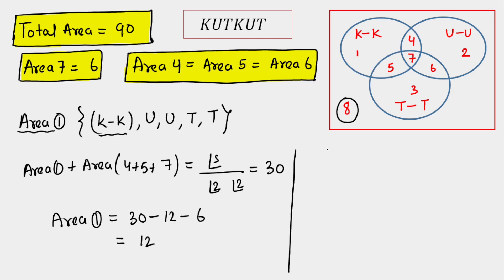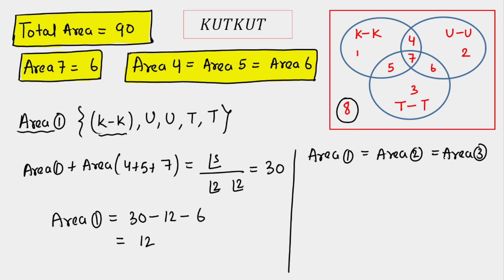By symmetry, the calculation for area 2 and area 3 is exactly the same. So area 1 = area 2 = area 3 = 12.